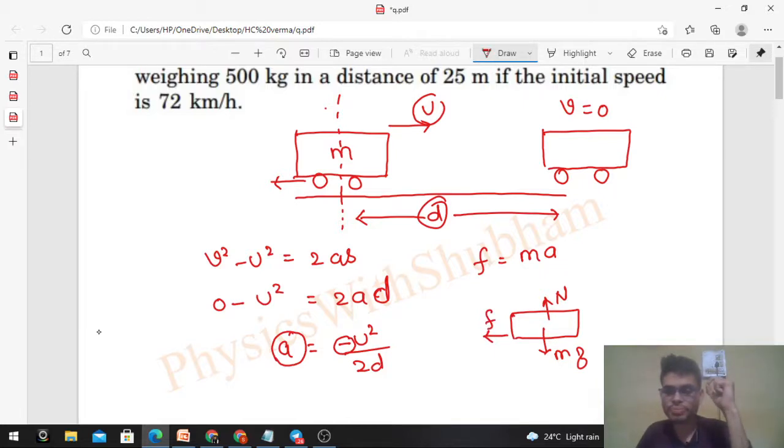Then you can write f = ma in horizontal direction. f which is friction force equals mass into acceleration, so mass into acceleration u²/2d. I removed the negative sign because I am taking the magnitude. You can understand that friction force is acting in the backward direction, therefore acceleration has a negative sign.